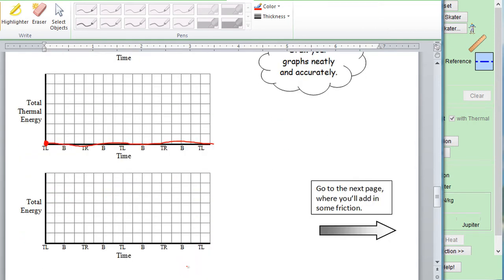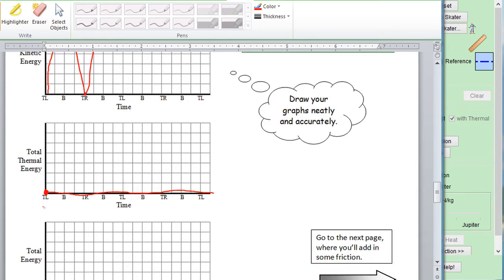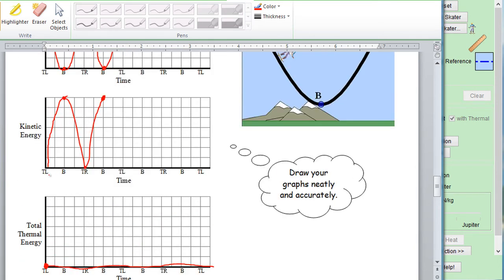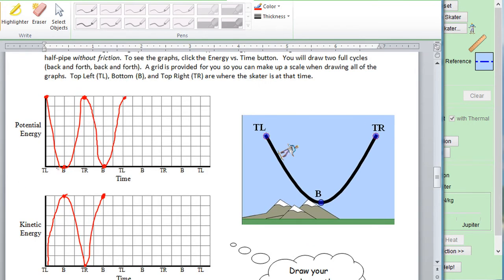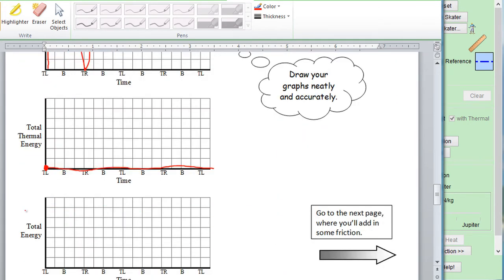Hopefully you can draw that a little bit cleaner than I am with my mouse. Then we get to total energy, the sum of those three. And for every point along it, we can just add them up. This is zero for thermal energy. This is zero for kinetic energy. This is seven for potential energy.